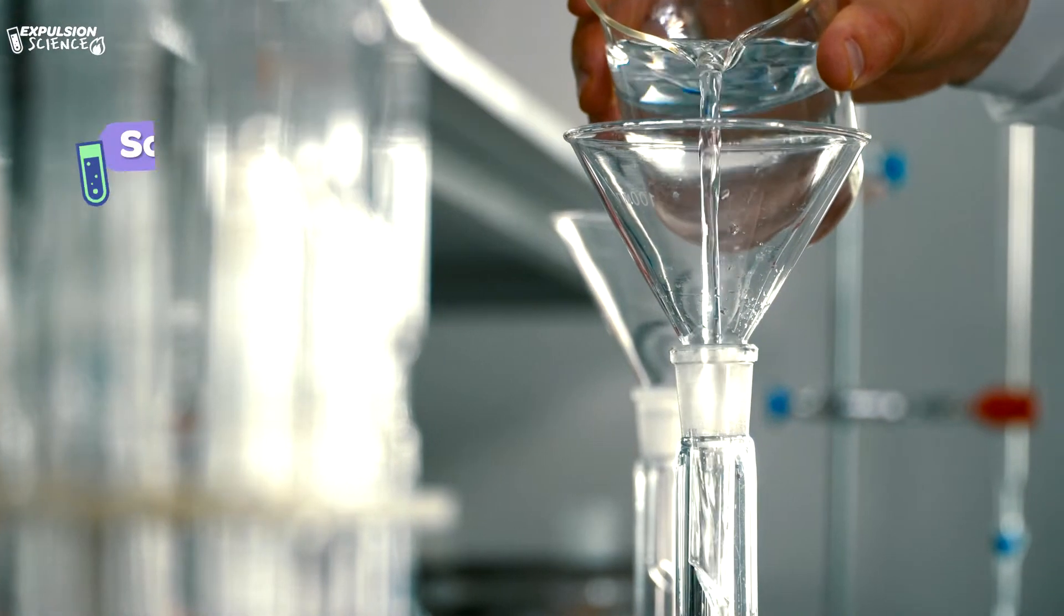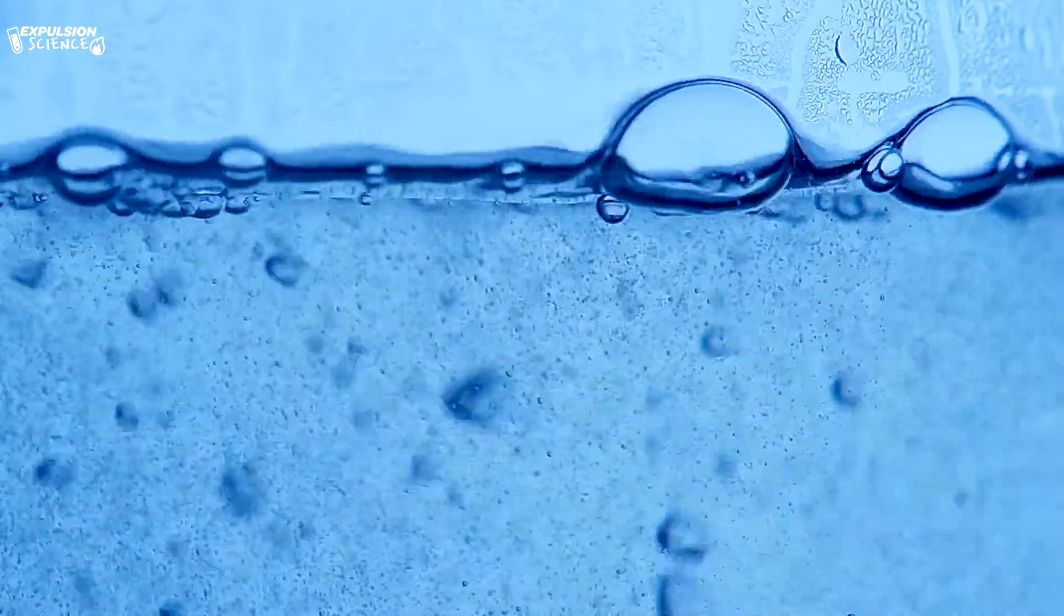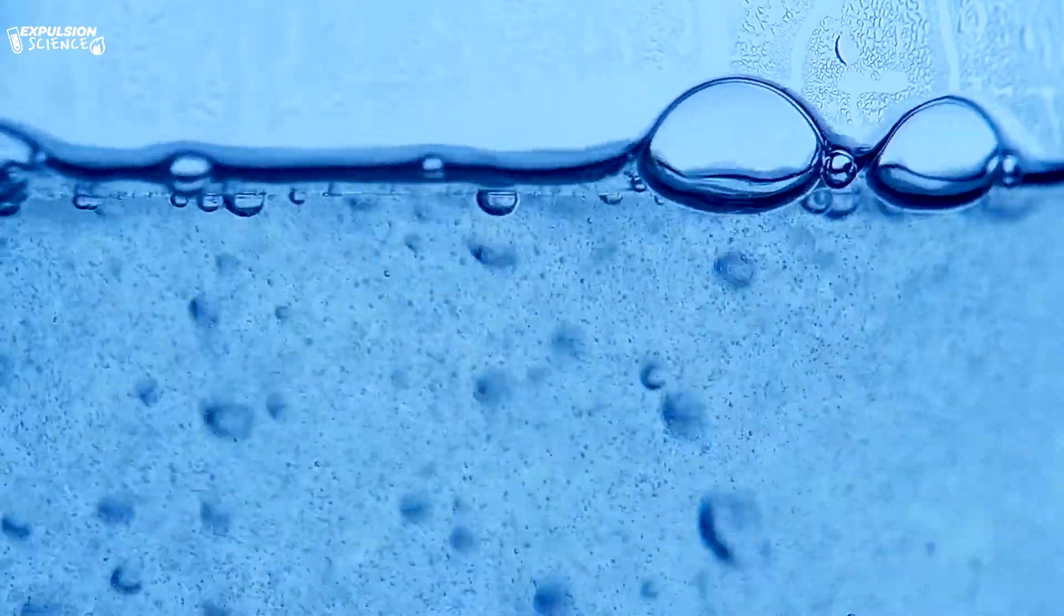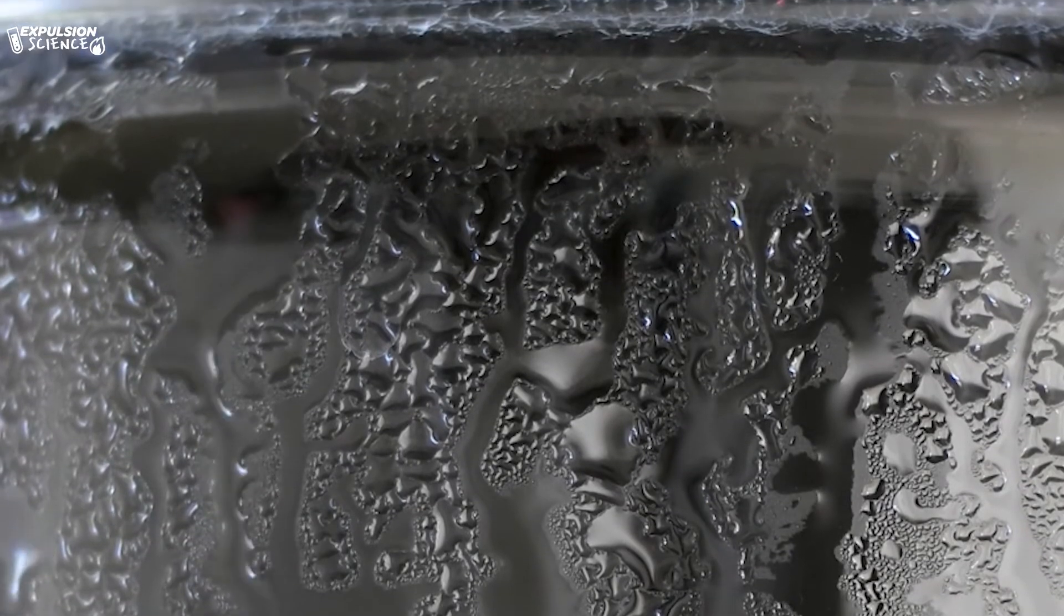So today we're going to separate alcohol and water that are both mixed together in the same container. The difference between alcohol and water is their boiling points. Alcohol is going to have a lower boiling point than water, and so if you were to boil the two together, the alcohol will evaporate first and the water will be left behind.